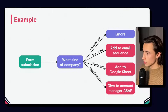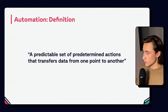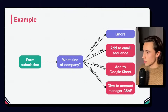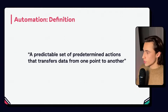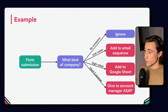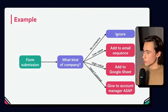As you can see here, we have a predictable set of predetermined actions. Depending on which kind of company is submitting the form, we have a very predictable set of actions that need to be executed. And we have a data transfer from one point to another — the starting point being the form submission — and depending on what kind of company is submitting the form, we're going to be transferring the data to either an email tool, a Google Sheets, or, for example, Slack to notify the account manager.